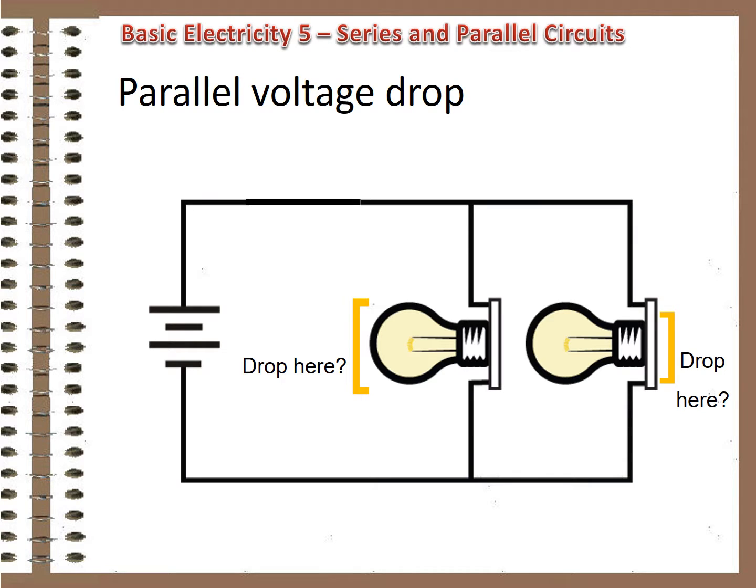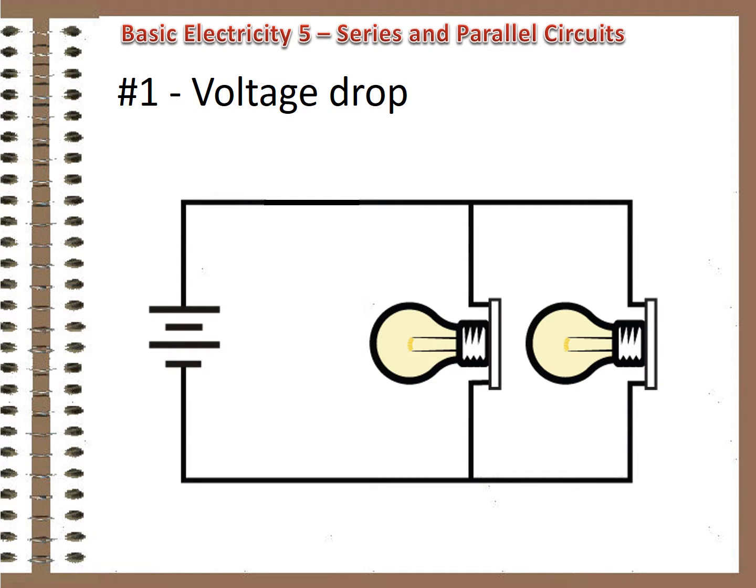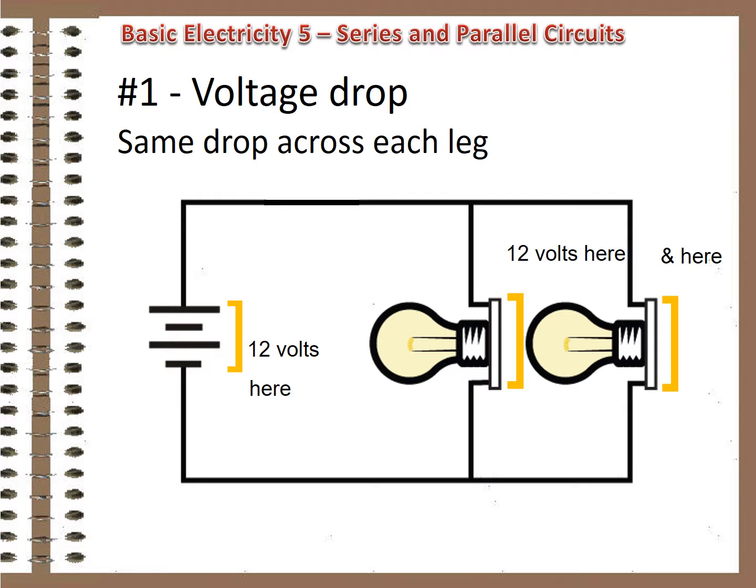First off, what do you think the voltage drop across each device will be? Shared? The same? Something totally weird? Turns out it is the same. The voltage drop across each leg of a parallel circuit is the same as the voltage of the source, which means that each leg has the same potential energy available to it as if there was only one device in the circuit, rather than having to continually split it up with all the other devices like happened in the series circuit.